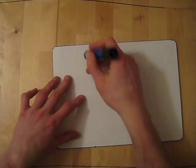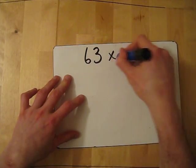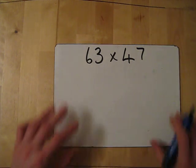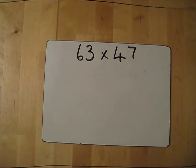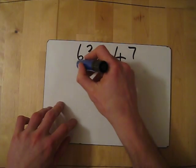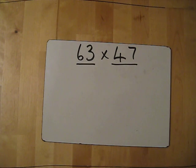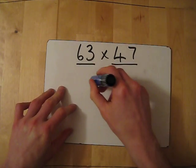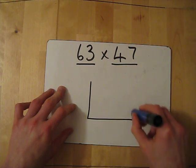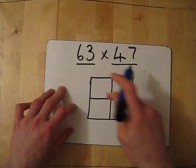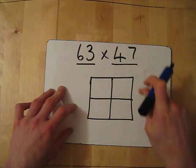So say I have 63 times 47. Now, some of you will know the grid method of doing this, so it's similar to setting it out like that. So I've got two digits here and two digits here, which means that I need to do a grid which is two by two. So, I complete my grid. I've got my two by two grid.